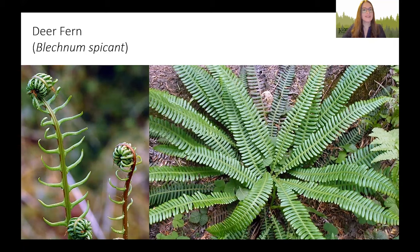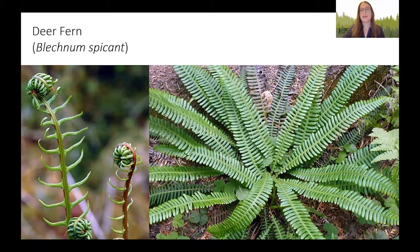Deer ferns have a more delicate appearance with rounded edges as opposed to sword ferns. They grow to be about two feet wide and one foot tall. They actually have two types of fronds: sterile fronds, which lay closer to the ground, and fertile fronds, which tend to stand straight up and are a bit narrower. As their name suggests, they're enjoyed by elk and deer, and they grow in moist areas with partial to full shade.